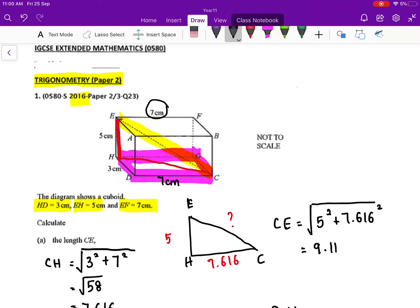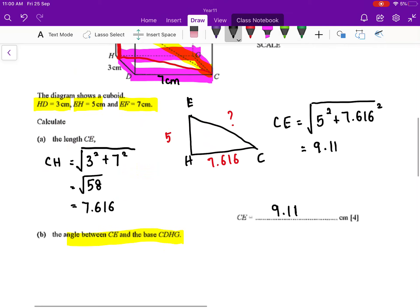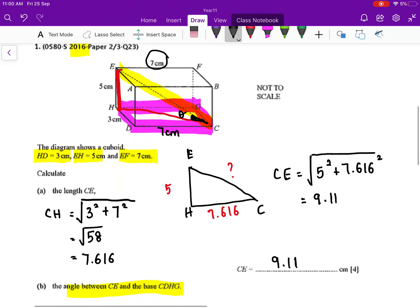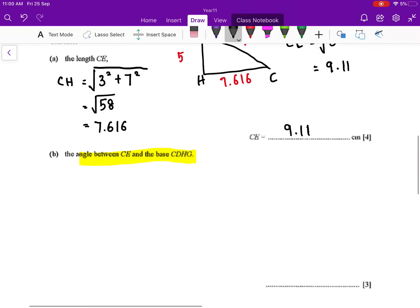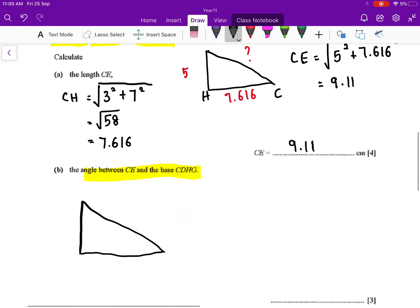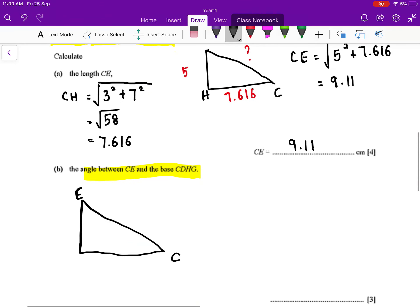So the angle that is actually appearing between the base and also CE is the angle that I have highlighted right now, which is this is the one that we are going to calculate. Okay, so basically we are going to calculate the angle ECH. So I'm drawing out the triangle. So we are going to calculate the angle ECH.